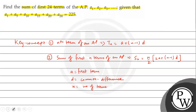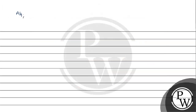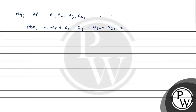Inhi dono concepts ko use karke is question ko solve karte hain. According to the question, AP is A1, A2, A3, A4 and so on. Also, A1 plus A5 plus A10 plus A15 plus A20 plus A24 is equal to 225. Ye question mein diya rakha hai. To maan lete hain, let the common difference of the given AP be D.